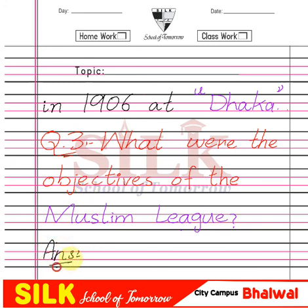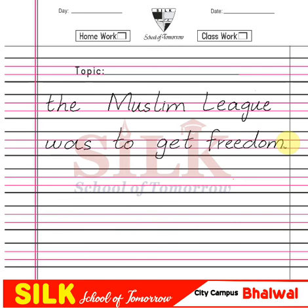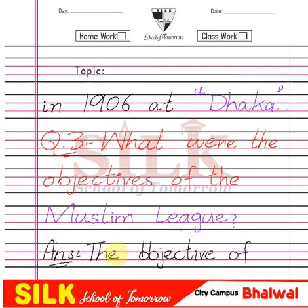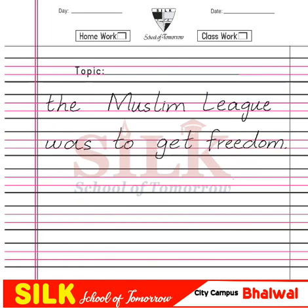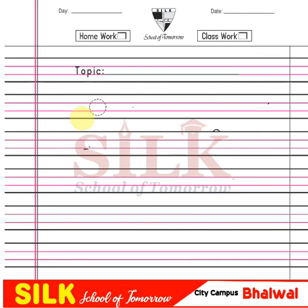Yes, very good. What were the objectives — maqasid — of the Muslim League? The objective of the Muslim League was to get freedom — azaadi. The objective of the Muslim League was to achieve freedom. After that, students, take the next page and write day by day.